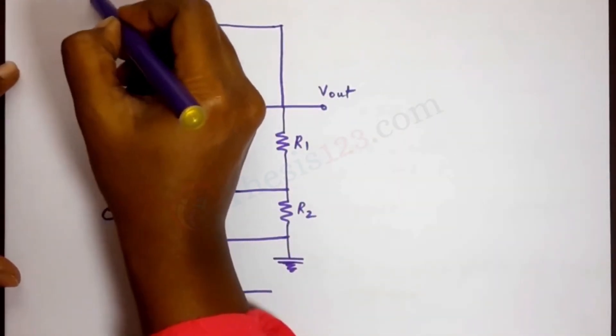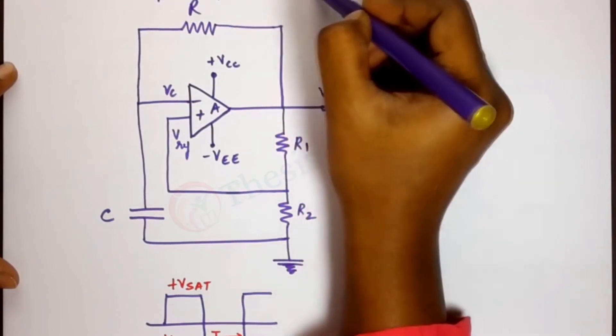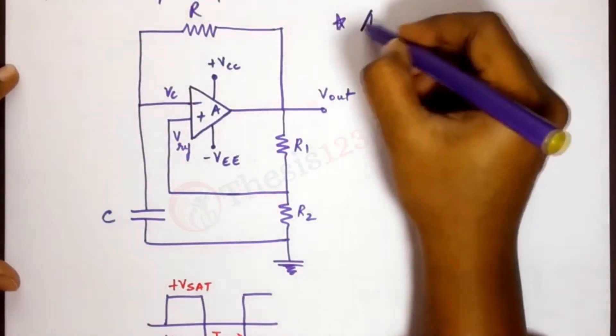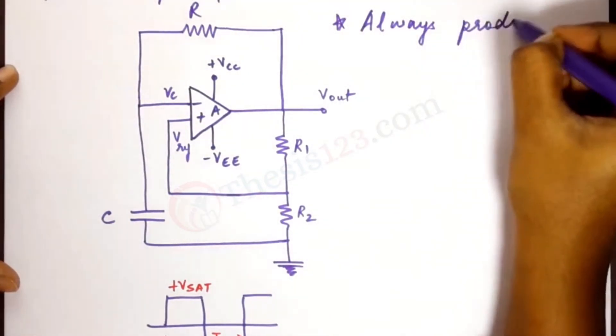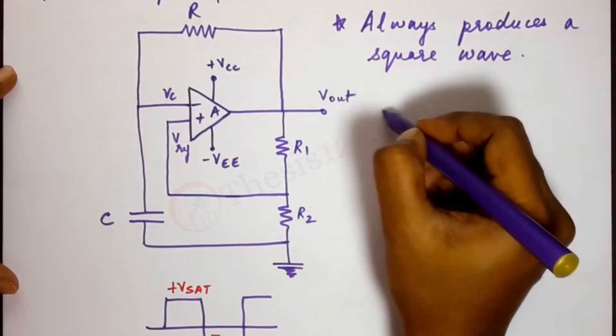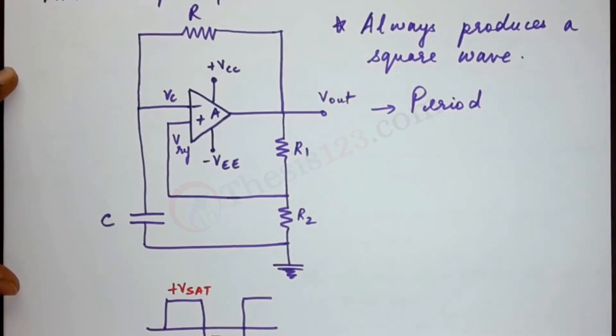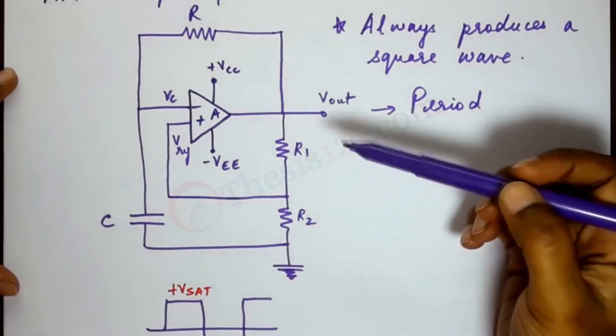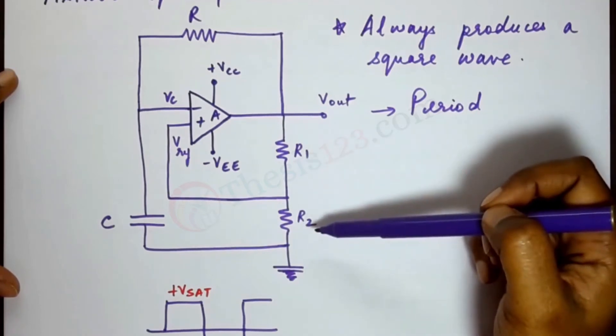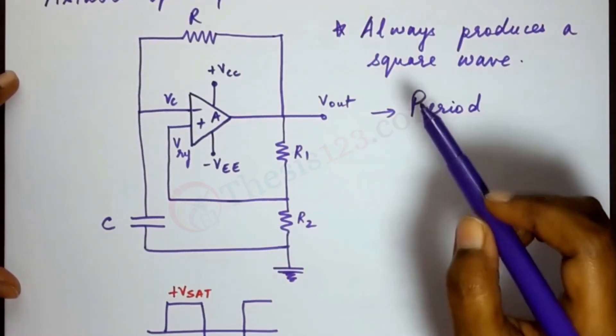So this is an A-stable op-amp multivibrator, and an important characteristic is that it always produces a square wave. Now in order to find the period, we will have to look at the output waveform, and it can be found by the RC time constant of the two timing components here, R1 and R2. So the feedback ratio given by R1 and R2 and the voltage divider network sets the reference voltage level. Using that we will be able to find out the period.